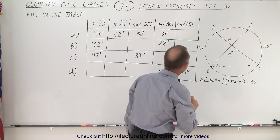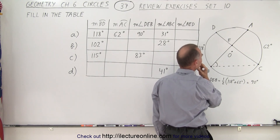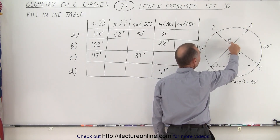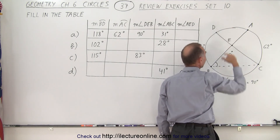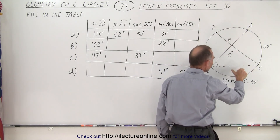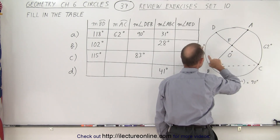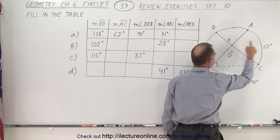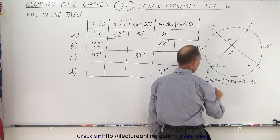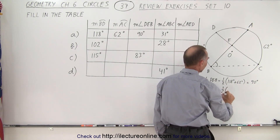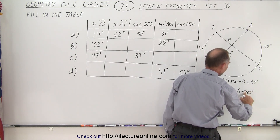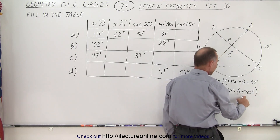Finally, we're trying to find the measure of angle A-E-D. We have to use a trick: this angle is going to be equal to half the sum of the two remaining arcs. We don't know the individual arc lengths, but we know their sum — it's 360 minus the two we already have, which is 180. So the measure of angle A-E-D equals one half of 360 degrees minus the sum of the other two, which is 118 plus 62 degrees, giving half of 180, which equals 90 degrees.